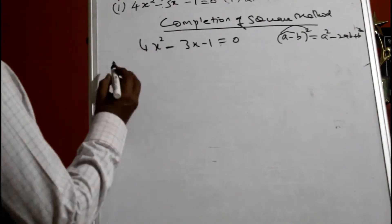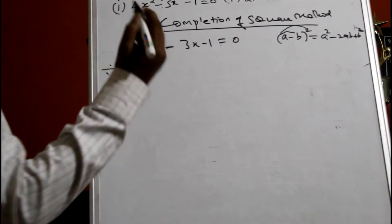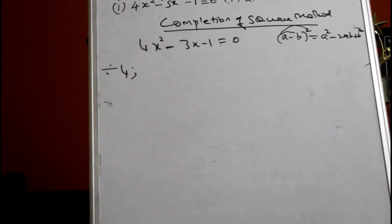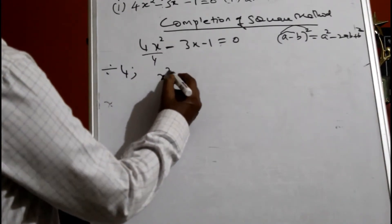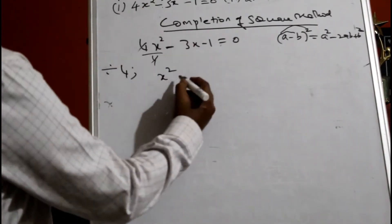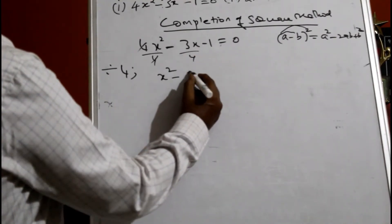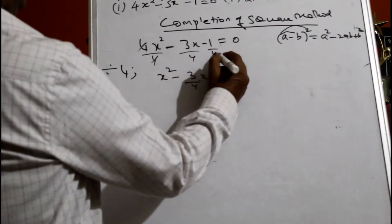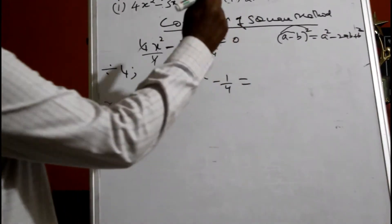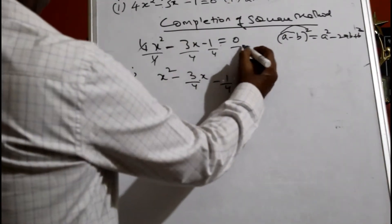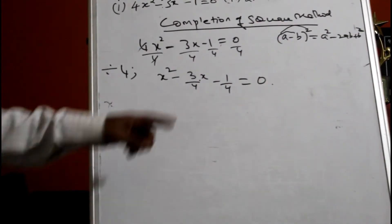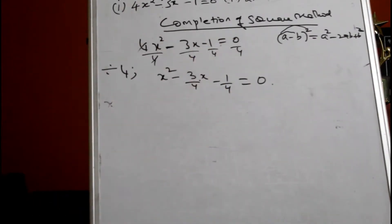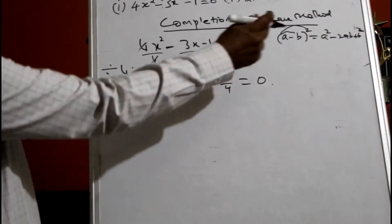The sum should start with x². Divide everything by 4, because if it starts with x it will be easier. When you divide by 4, you get x². So you get minus 3x by 4, and when you divide by 4 you get minus 1 by 4. Remember, even the right-hand side should be divided — then only it will be balanced. Zero by 4 is nothing but 0. So divide everything by 4. You get x² minus 3x by 4 equals 1 by 4.